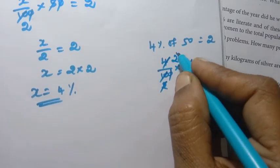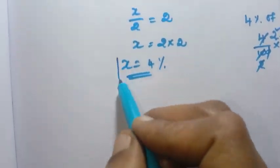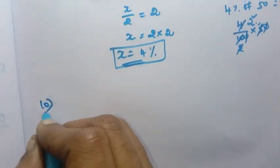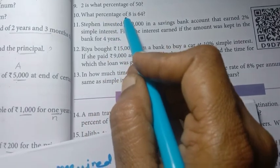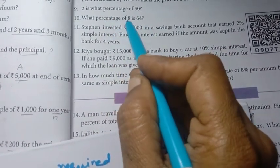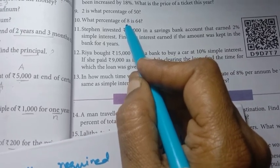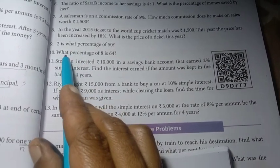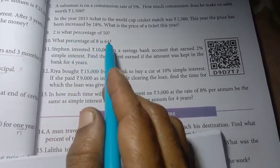Problem 10: What percentage of 8 is 64? Let the required percentage be x. So x percentage of 8 equals 64.